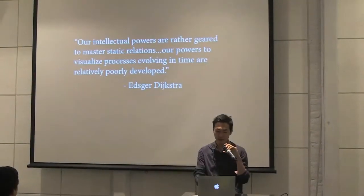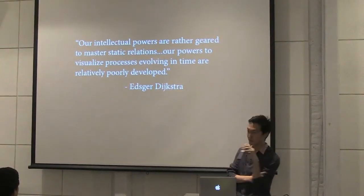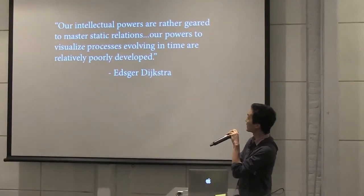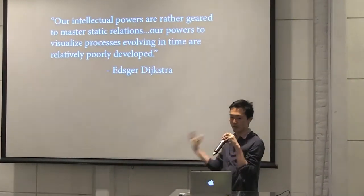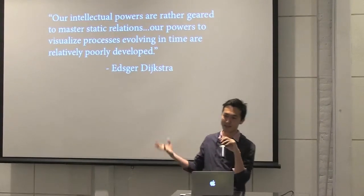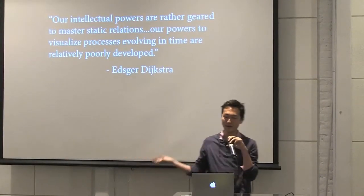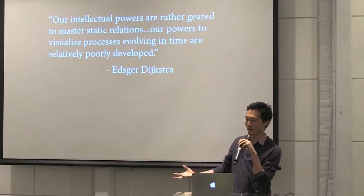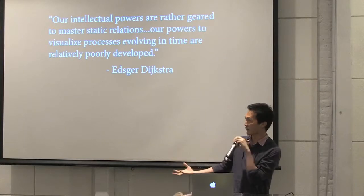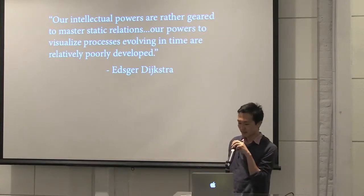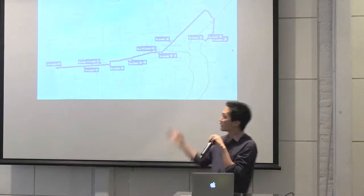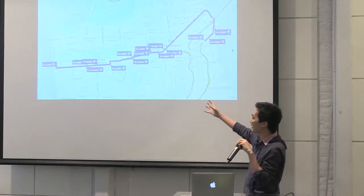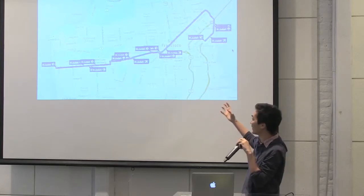A quote that really motivated me is from Dijkstra, who is a pretty famous computer science professor. He wrote this about code — his theory is that our mind works really well on static information, but it's very hard to visualize things over time. I thought it was actually really insightful for visualization. The problem is you have 2D data and then a time dimension, so you've kind of run out of dimensions to plot.